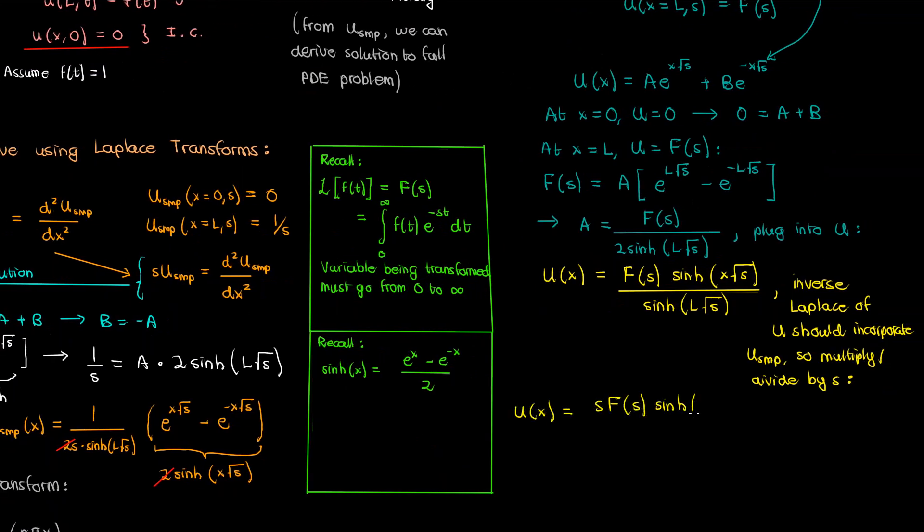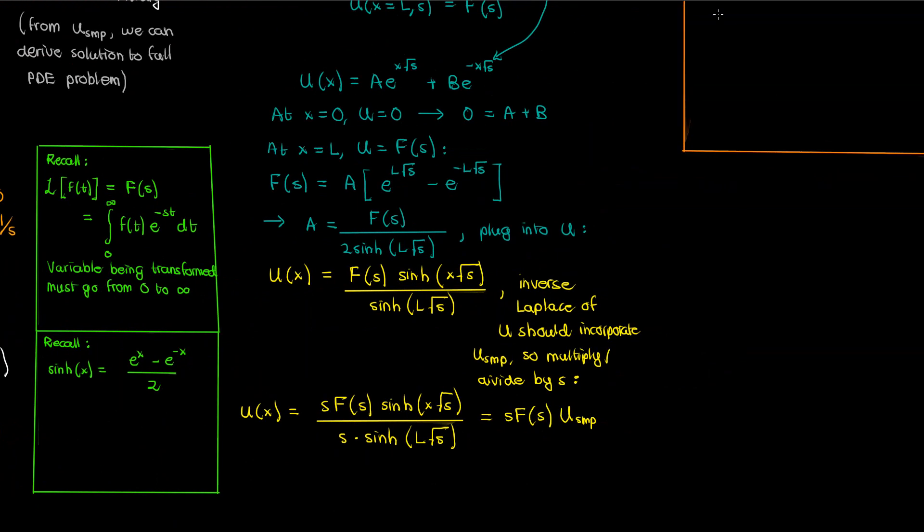And this is just S times capital F of S times U sub SMP. Now if you recall from Laplace transforms, you'll remember that the Laplace transform for the first derivative of a function with respect to time, such as U sub SMP, is S times the Laplace transform of U sub SMP, which is capital U sub SMP, minus the initial condition on U sub SMP, which is really just 0. Therefore this product of S times capital U sub SMP in the expression for U of x are just the Laplace transform of the partial of U sub SMP with respect to time.